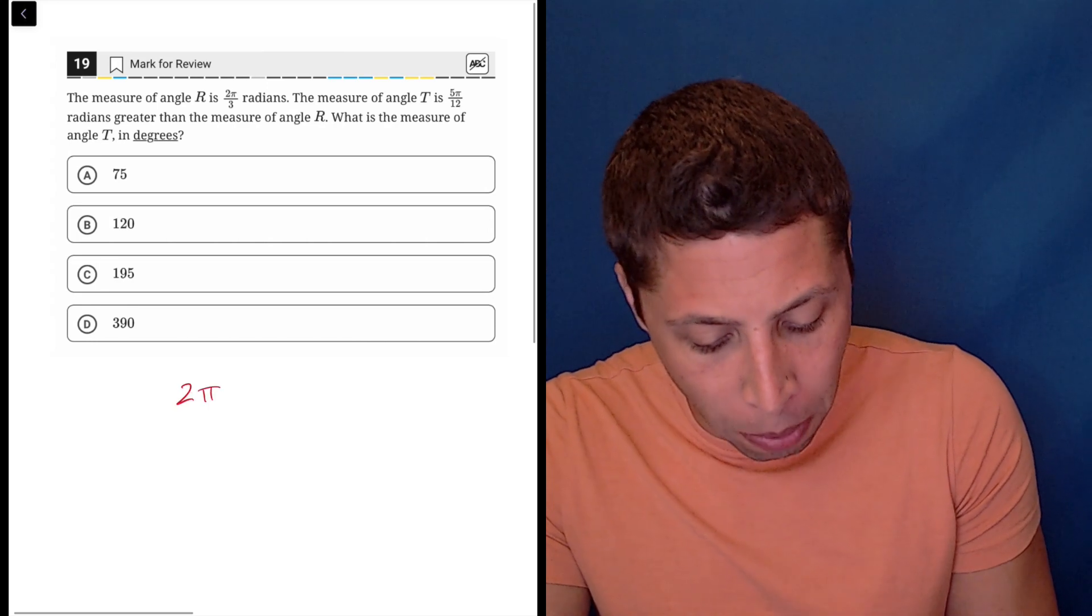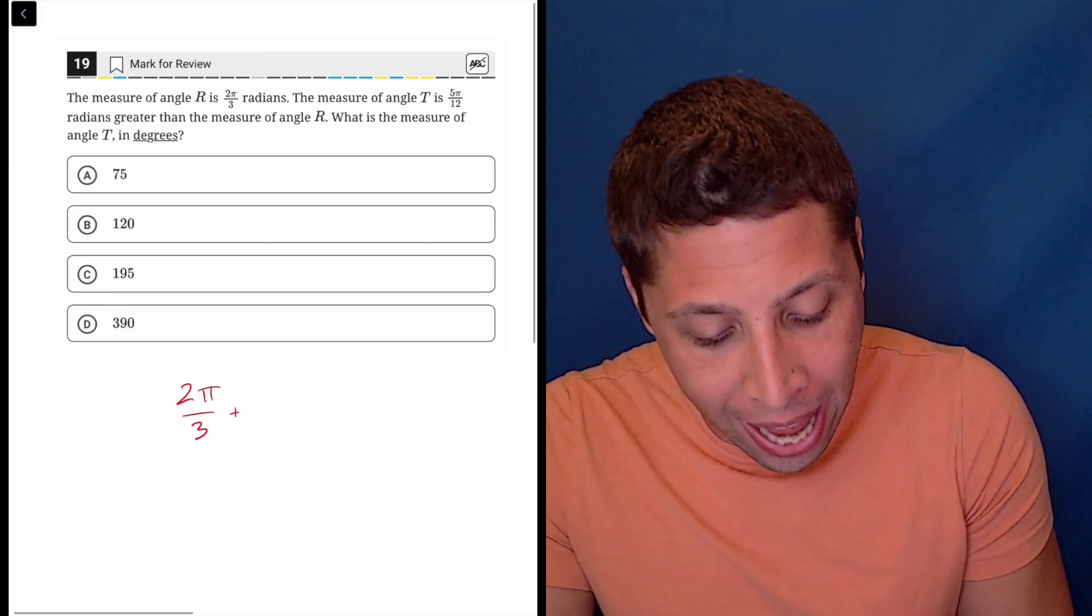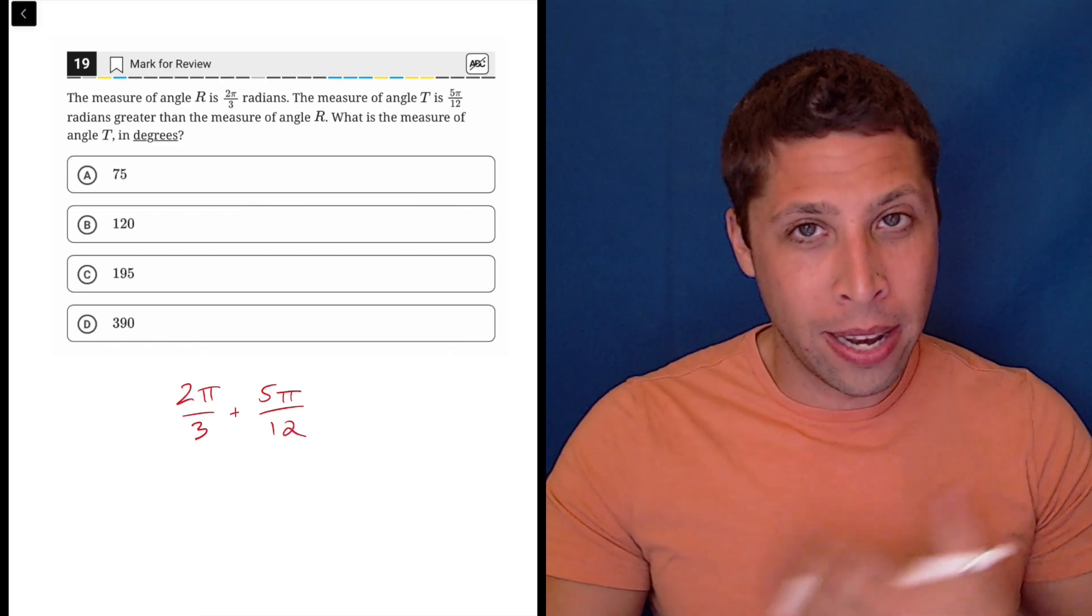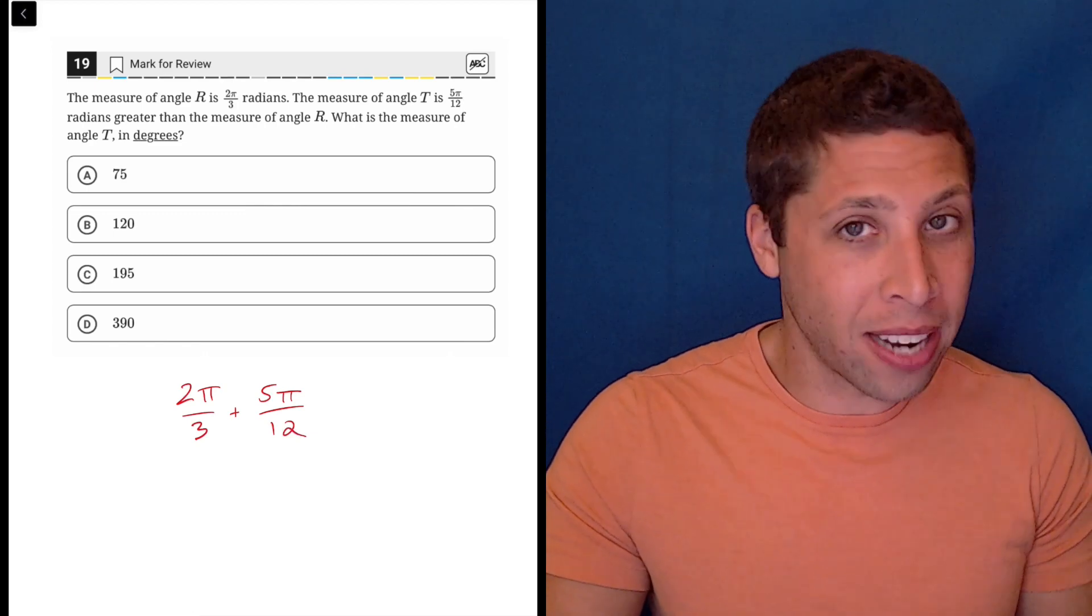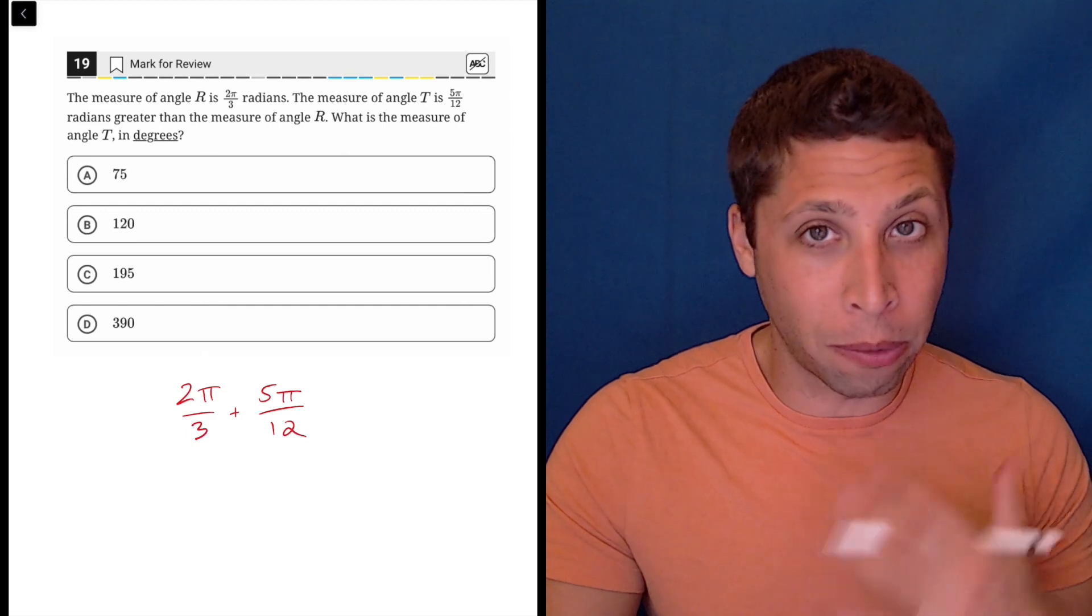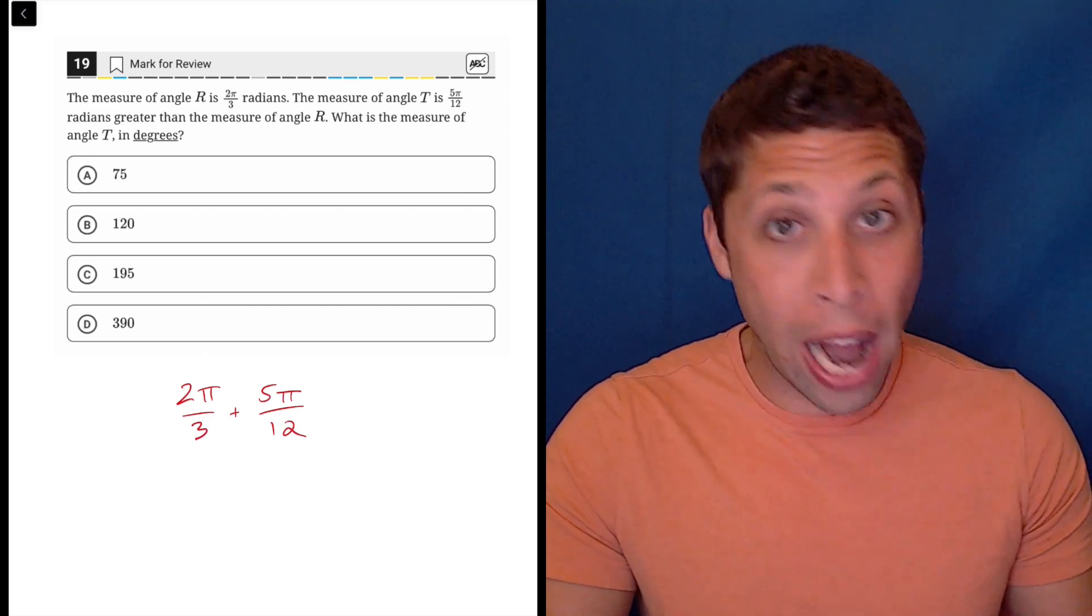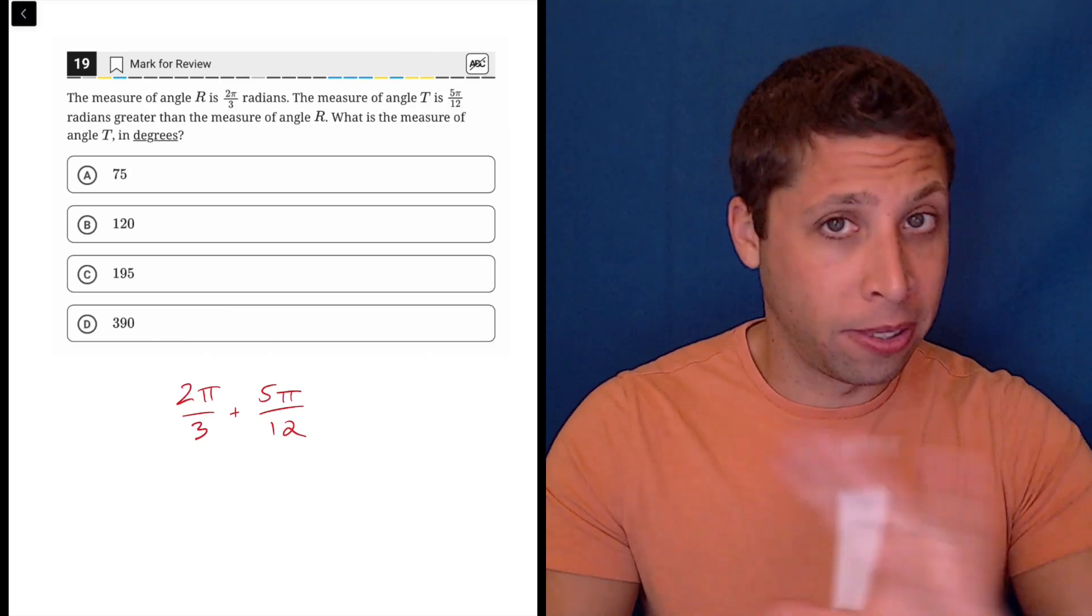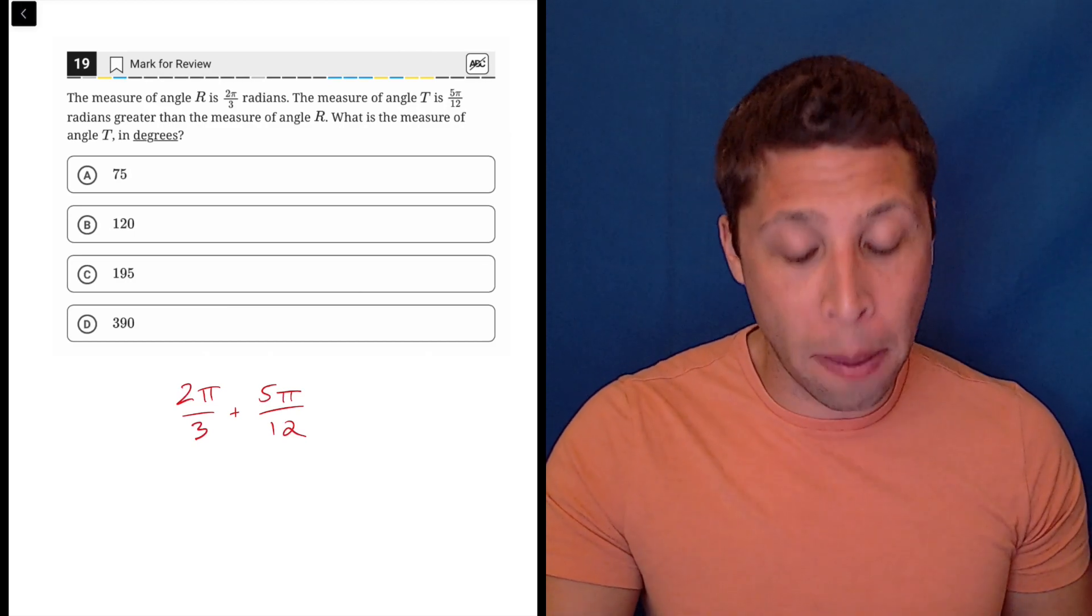Now that, again, is not as scary as it looks, because literally what we're just being asked to do here is add two fractions. So it doesn't really matter that the π is involved, ignore that. How do you add fractions? Simple question. We need to get common denominators.